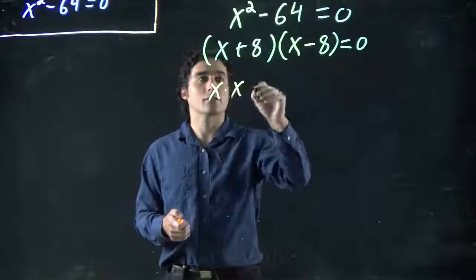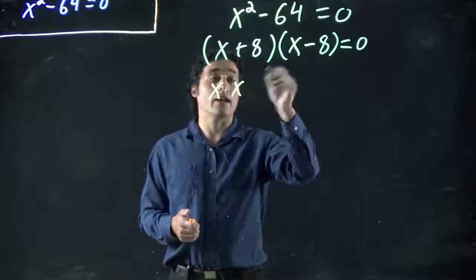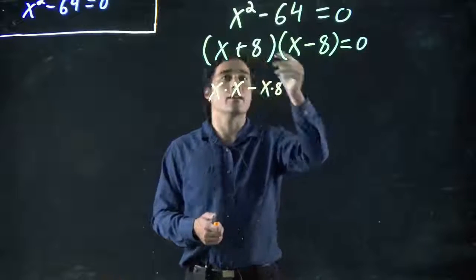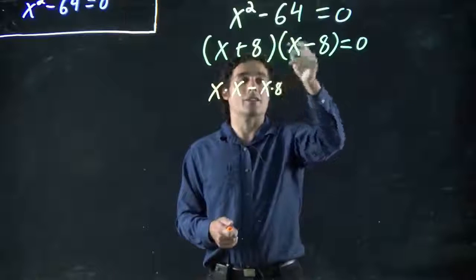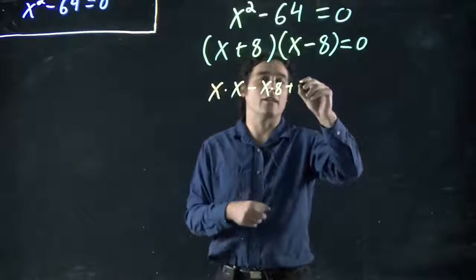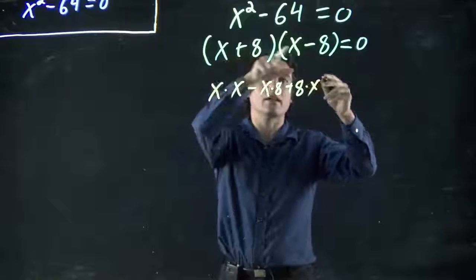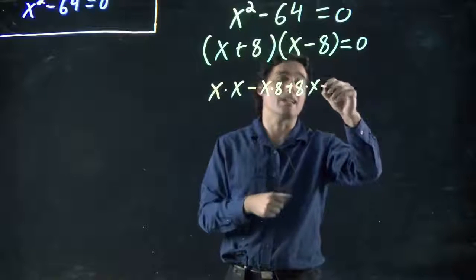So x times x, and x times minus 8 means minus x times 8. Then 8 times x, in this case plus 8 times x. And then finally 8 times 8. 8 times minus 8 even.